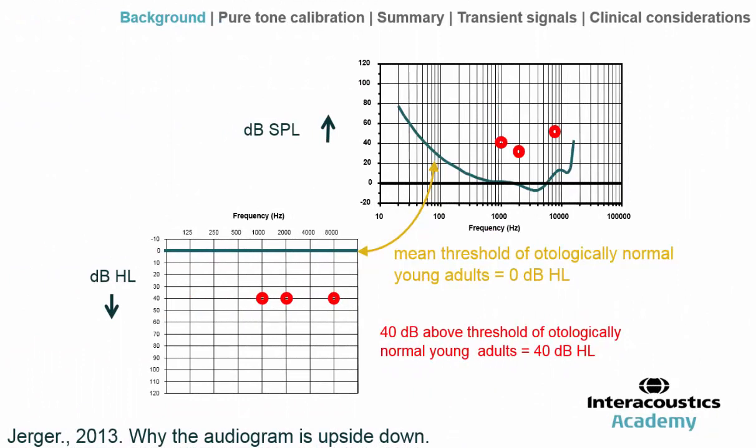Here we have on the left an audiogram with dB HL for hearing level. The effect of normalizing thresholds across frequencies gives us a flat line for 0 dB HL. When measuring someone's ability to hear sounds, we want to compare the individual's ability to normal — and so that 40 dB loss I was describing is now appearing as a clear, easy-to-follow flat line.